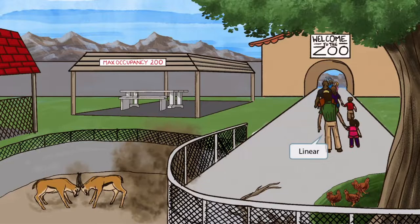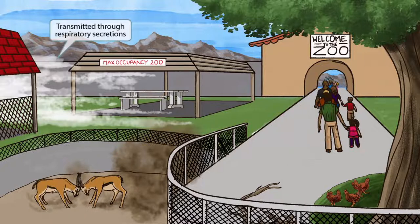Now you can see that we've added a line of people leaving the zoo. The zoo is beginning to close, so these people are forming a line as they exit the area. The line of people should help you remember that VZV is linear.